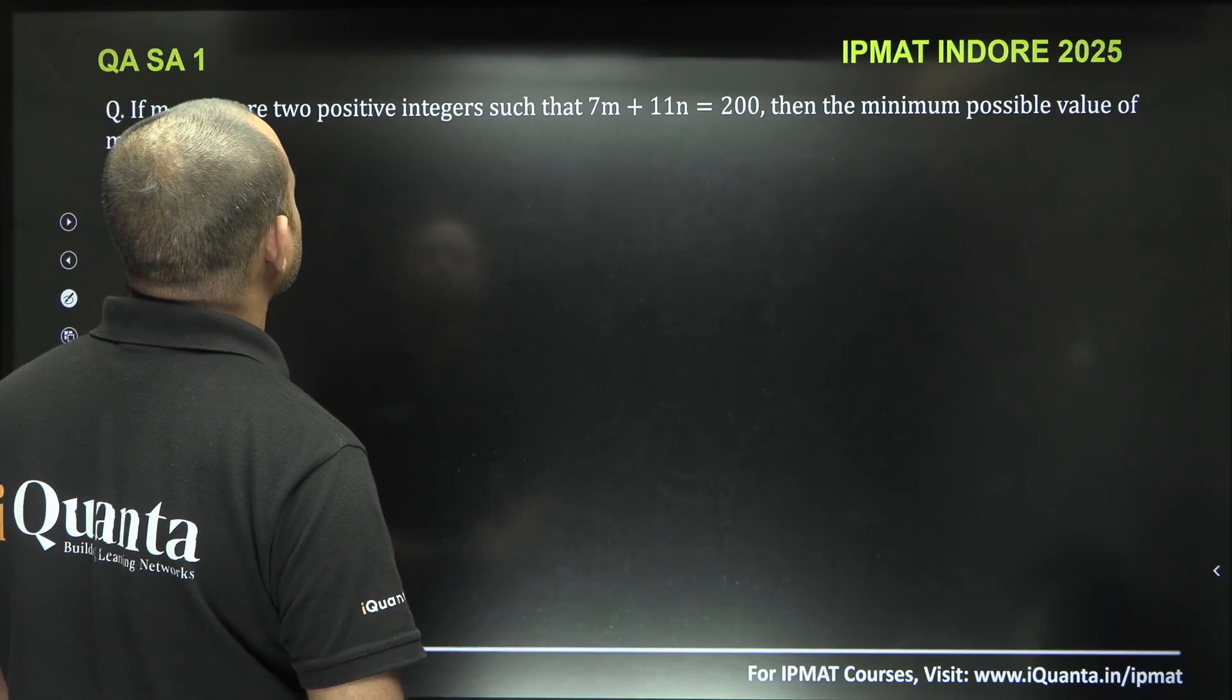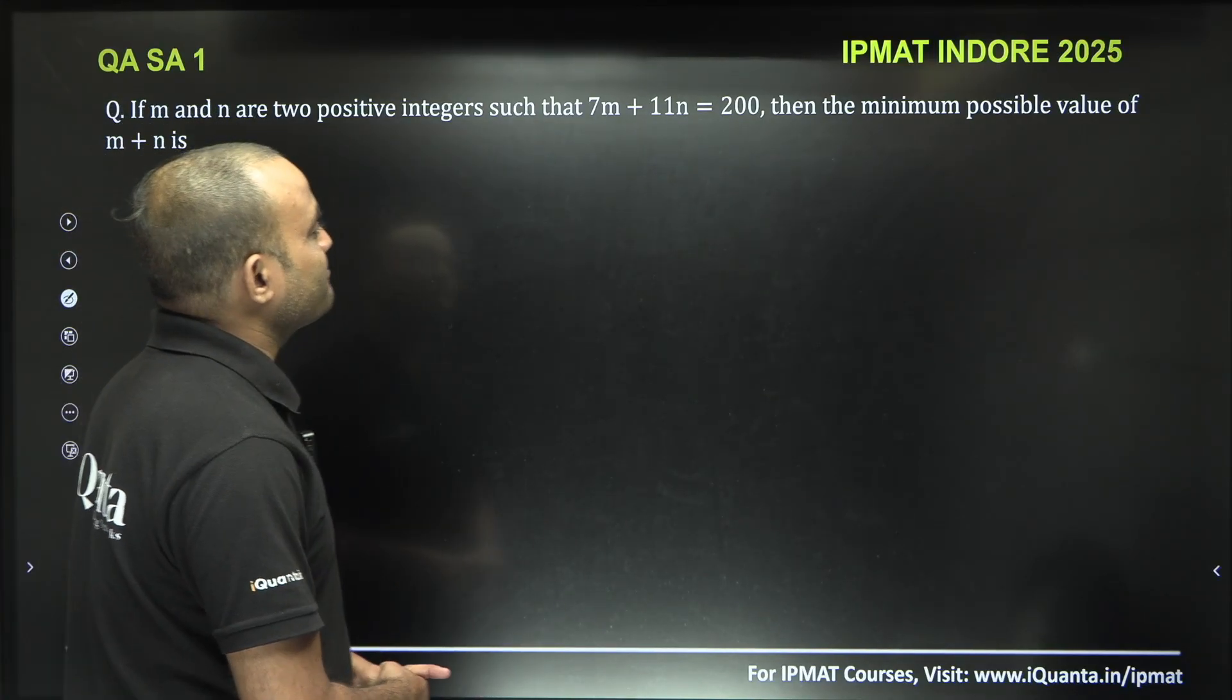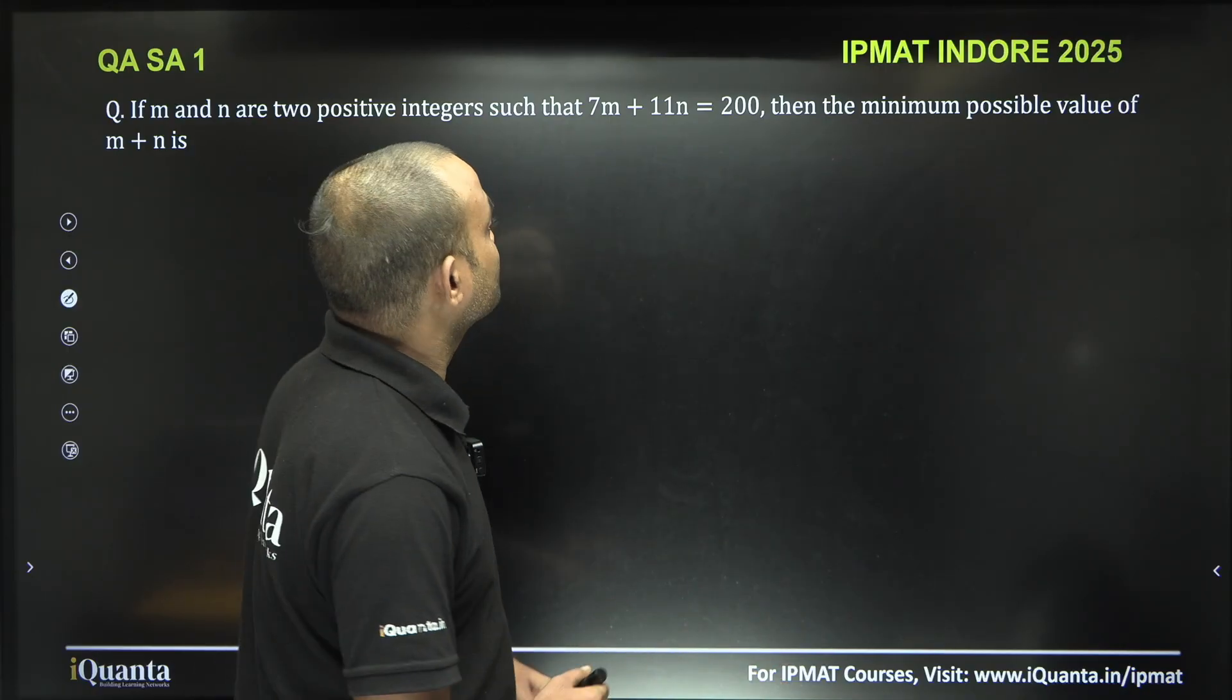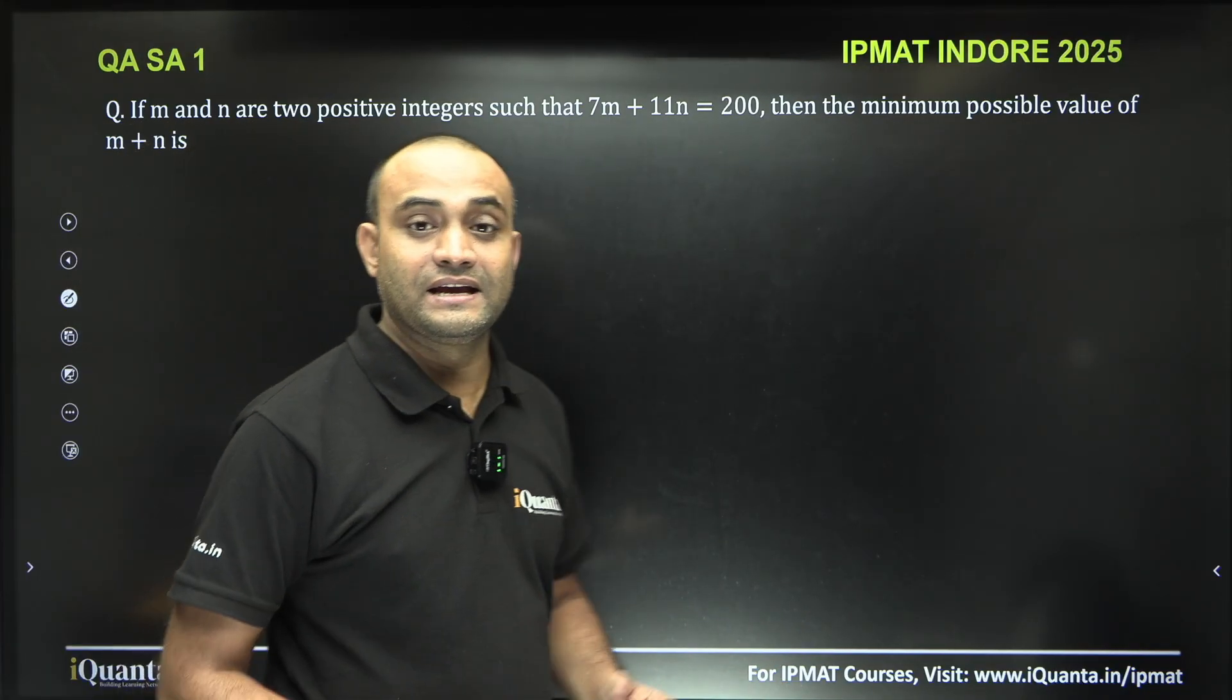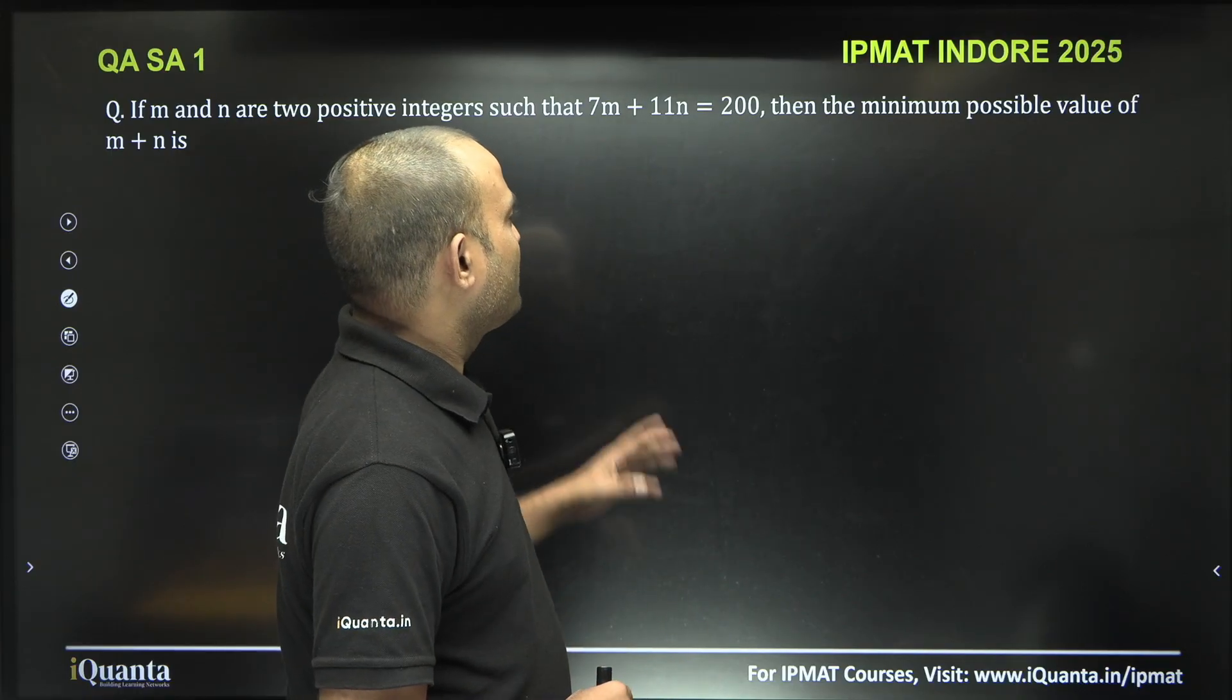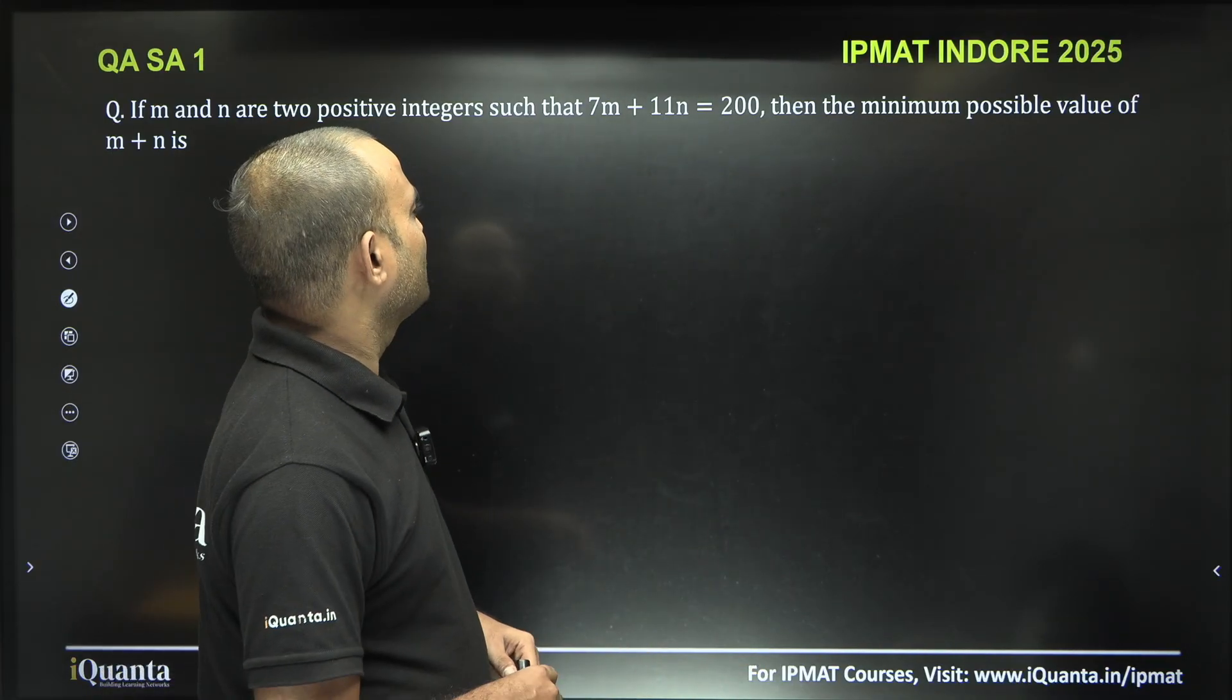If m and n are two positive integers such that 7m plus 11n is equal to 200, then the minimum possible value of m plus n is, what can we say about the minimum possible value of m plus n?